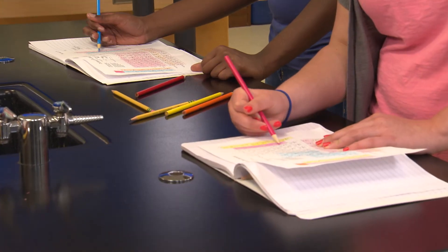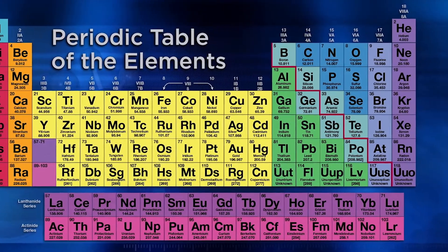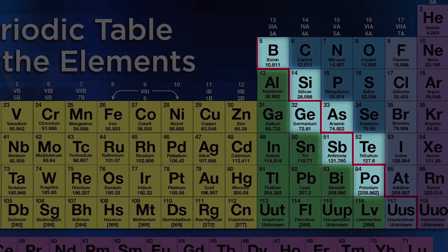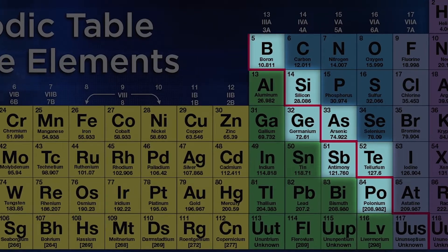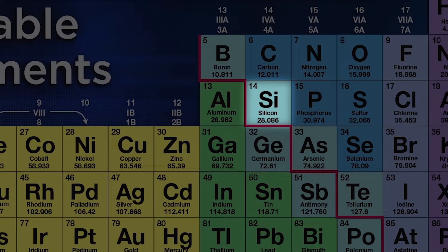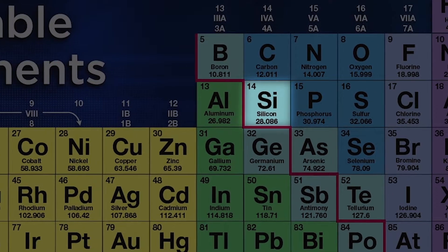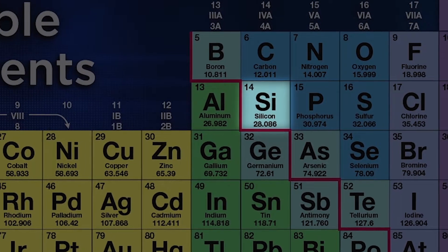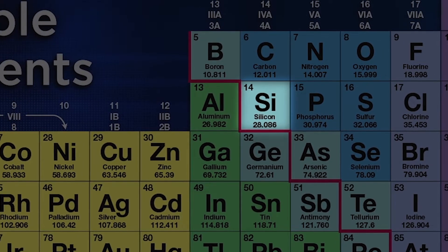Look at the stair line we talked about earlier. Do you see the elements whose edges make up the stair line? These elements are known as metalloids because they have properties of both metals and non-metals. Silicon is a well-known example because of its use in microchips for computers. It's the properties of elements like silicon that make objects in our everyday life possible. Could you imagine a life without your cell phones or computers? That's what we'd have if we didn't know the properties of elements and how to use them to our advantage.